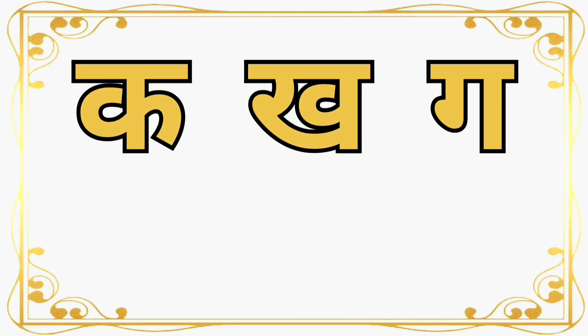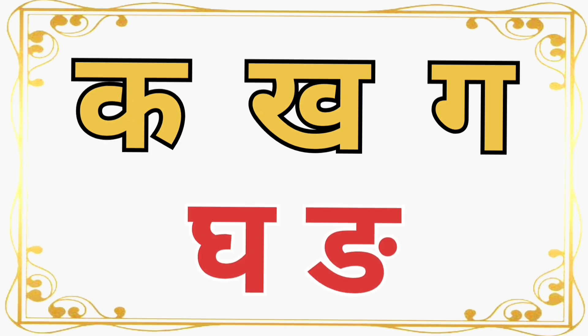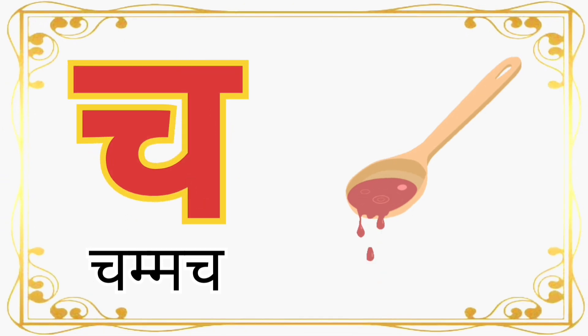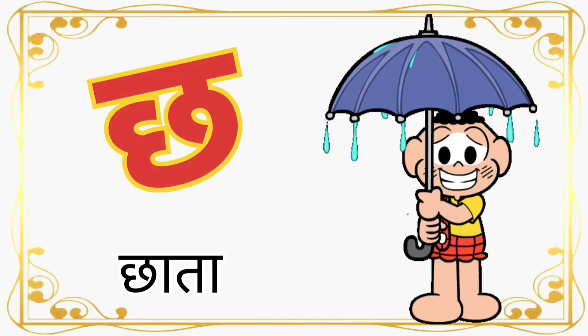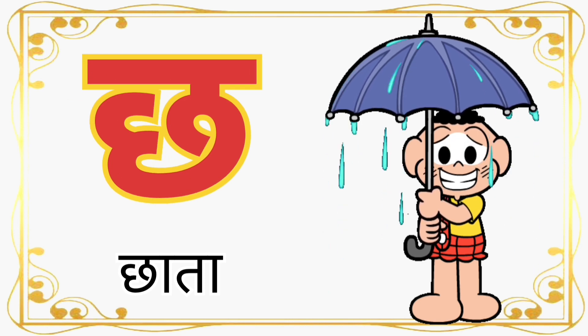आओ दुबारा पढ़ें: का, खा, गा, घा। च से चम्मच (Cha for spoon). छ से छाता (Chha for umbrella).